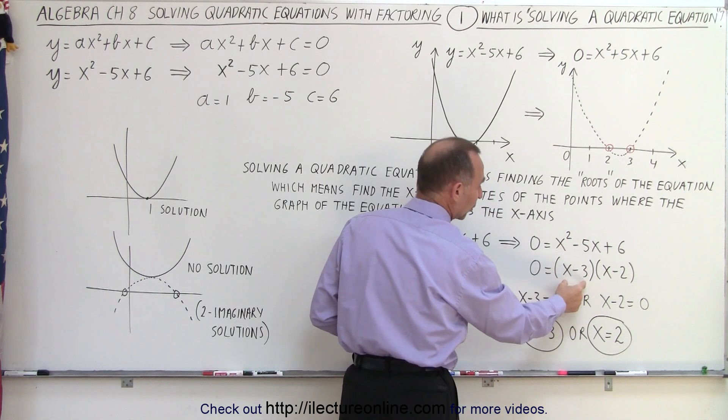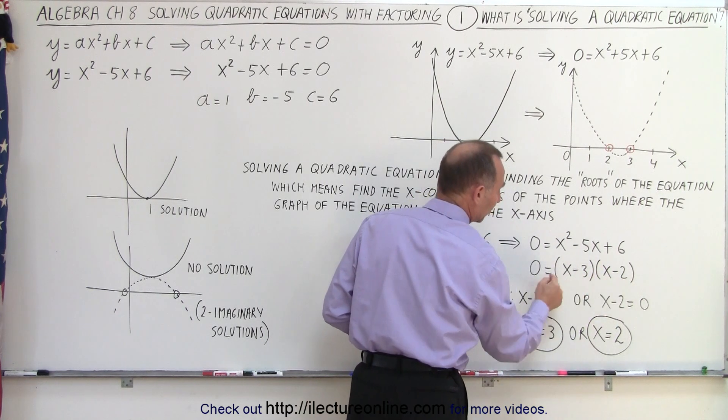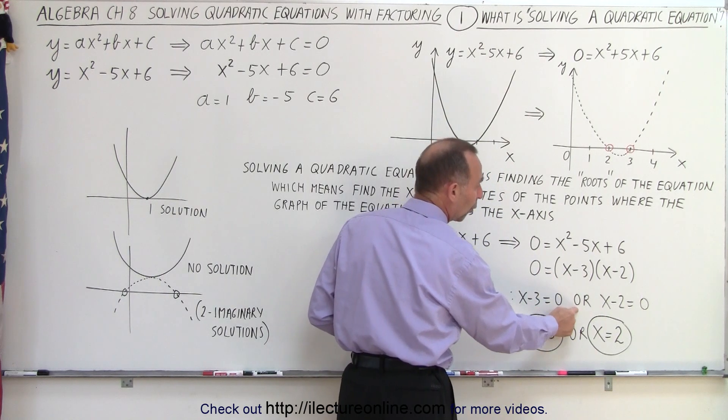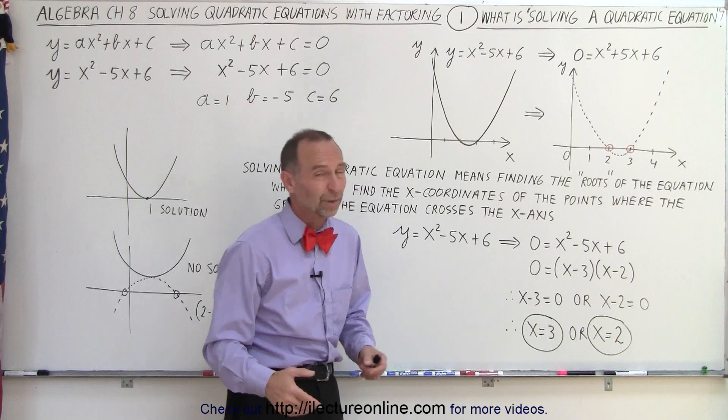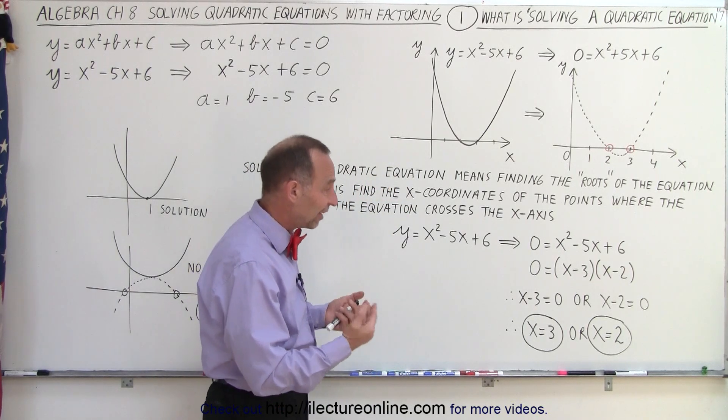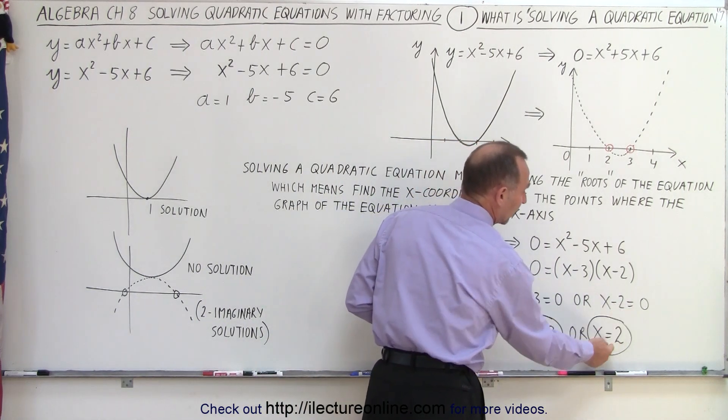And then we realize since we multiply the quantity x minus 3 times the quantity x minus 2 and we set it equal to 0, that means either x minus 3 must equal 0 or x minus 2 must equal 0 or both. But in this case, it can't be both. So if x minus 3 equals 0, then x equals 3. If x minus 2 equals 0, then x equals 2.